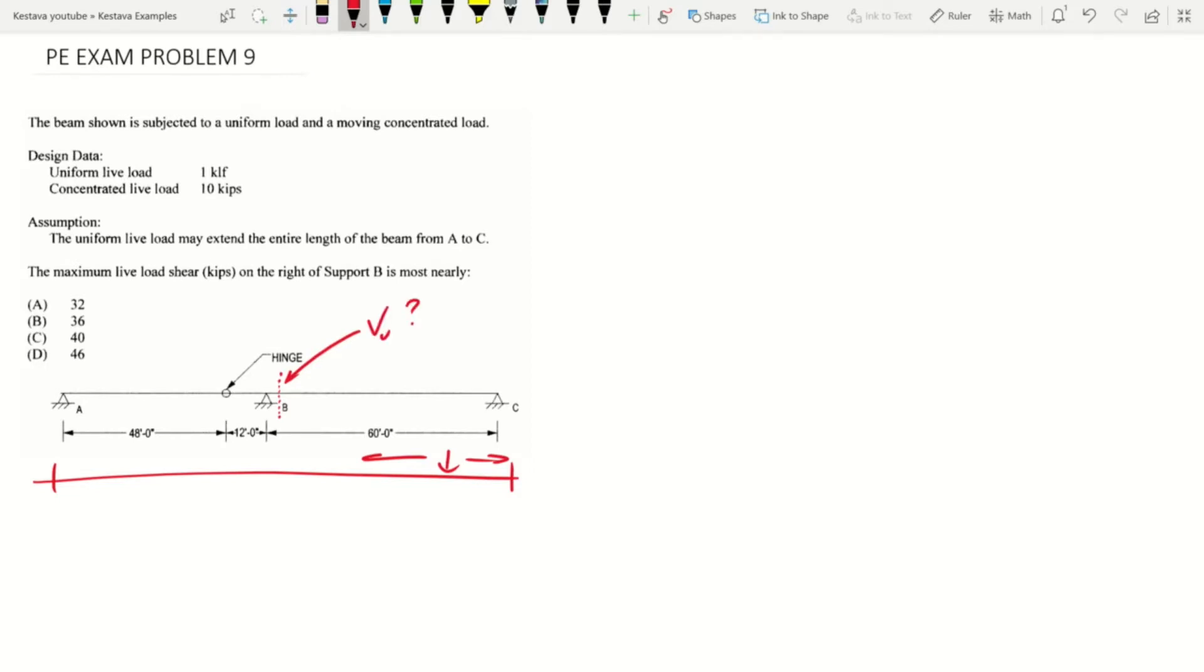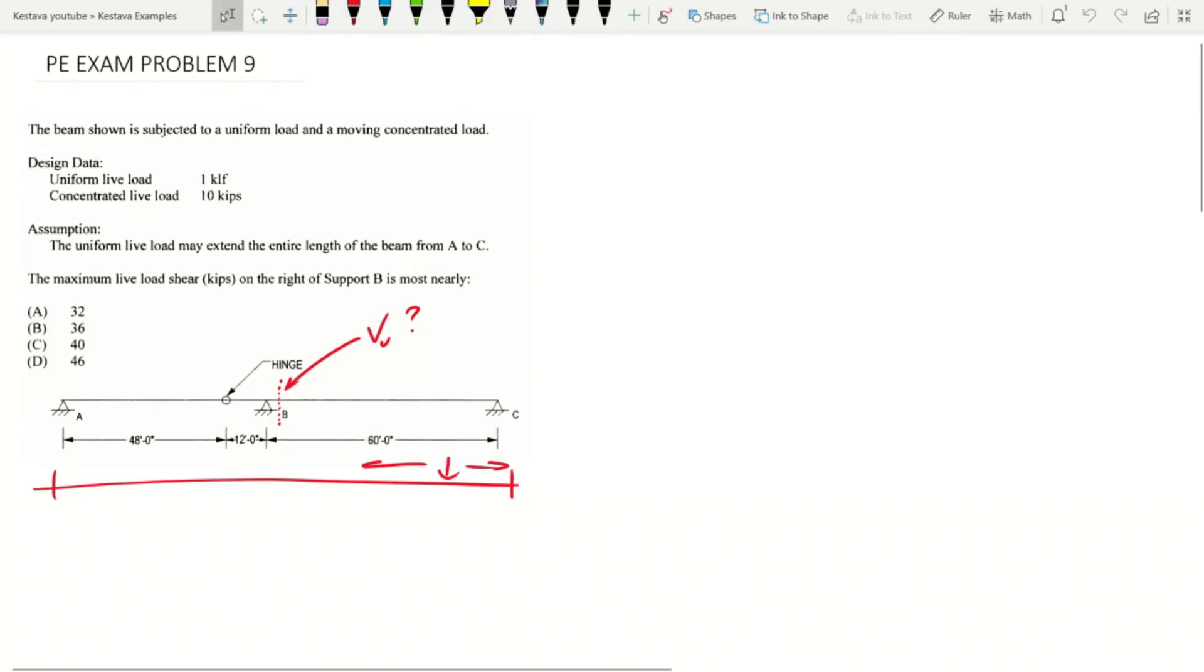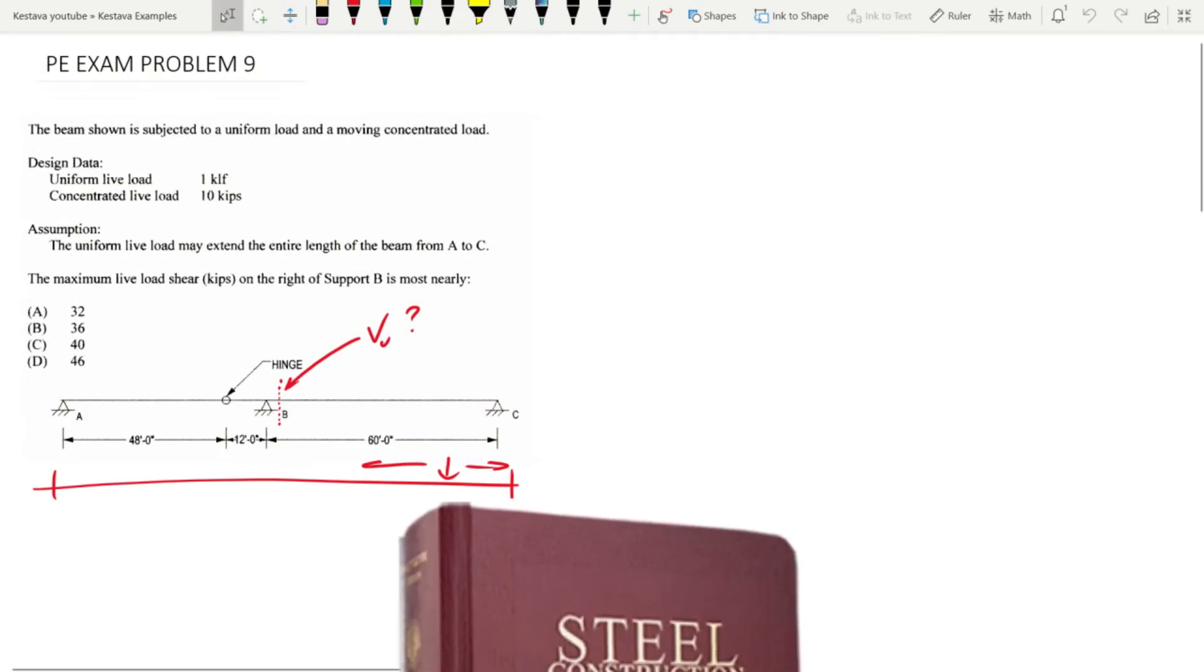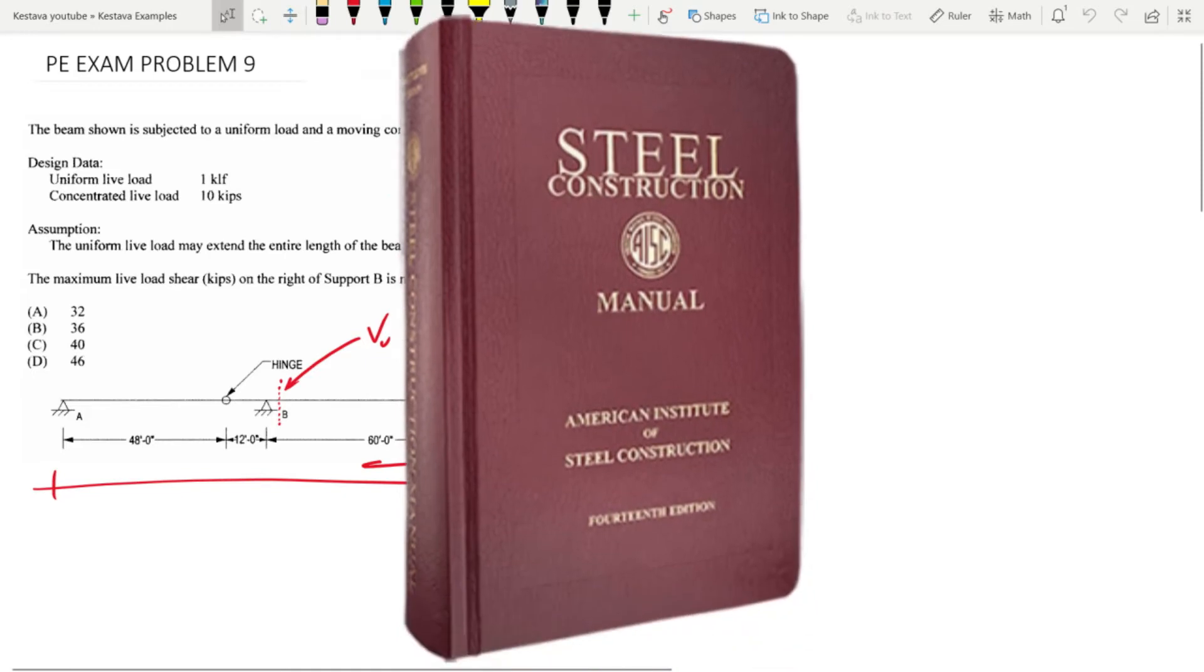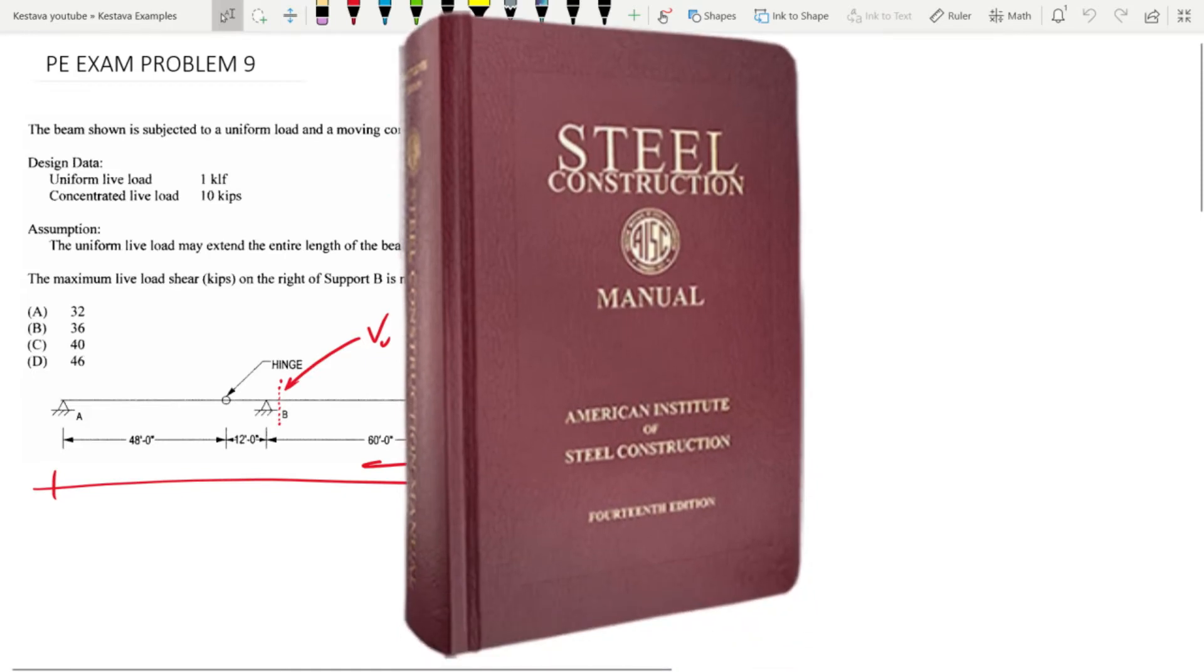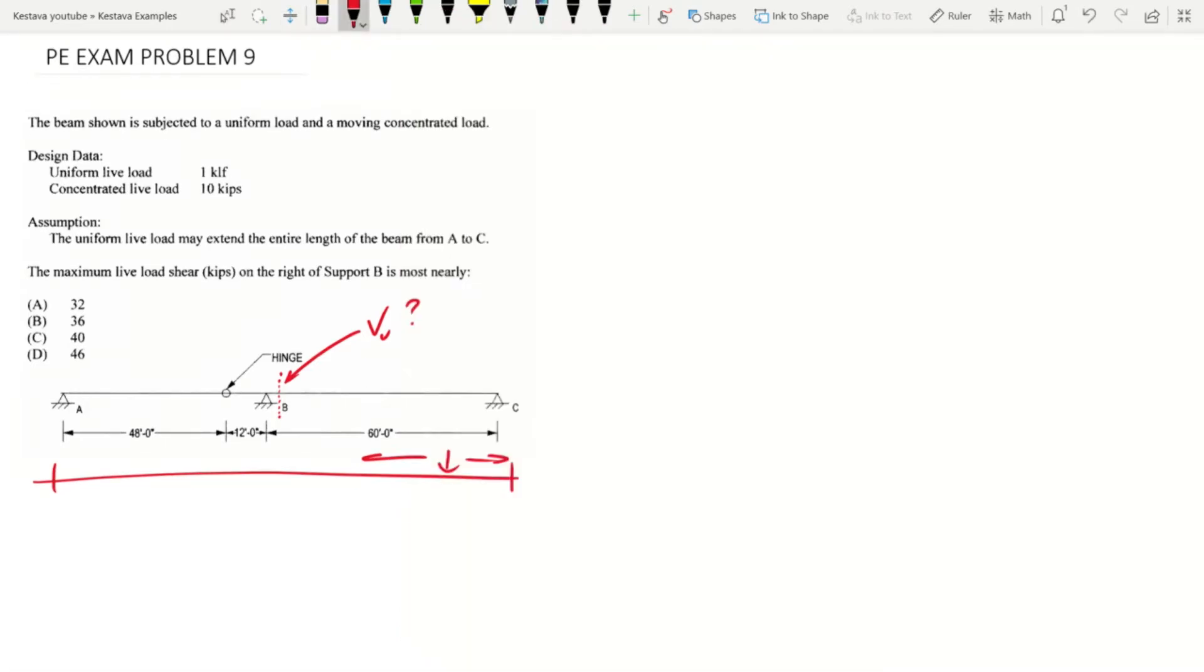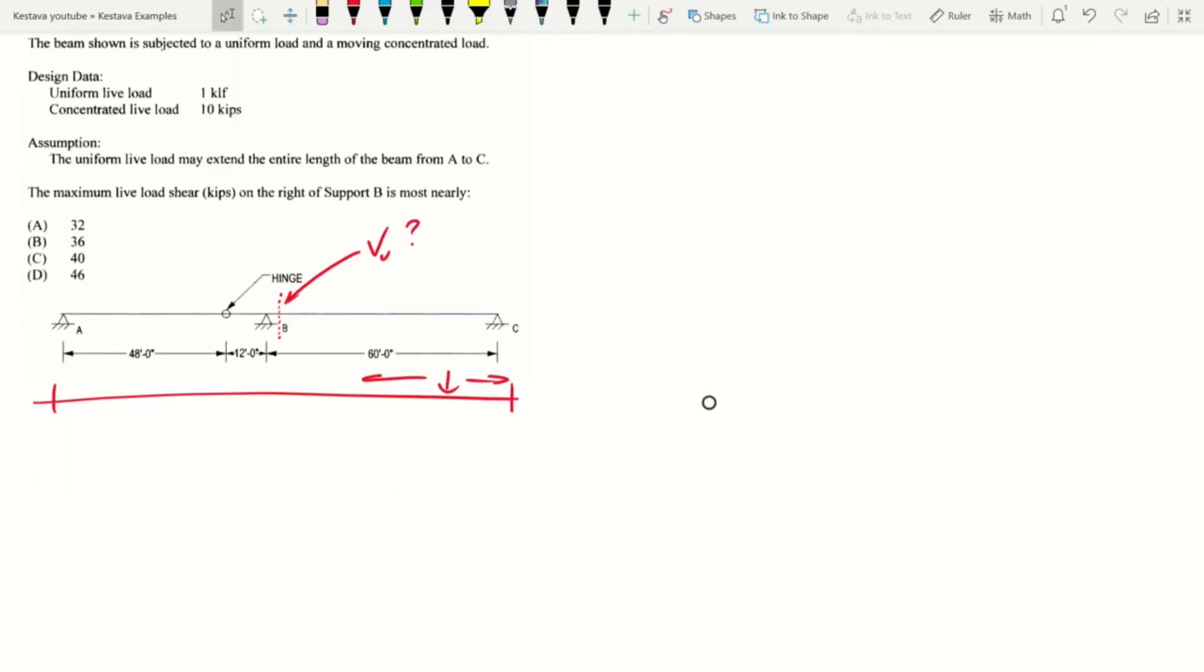All right, so where I'm going to jump to first is, as always with me, the AISC steel manual. This would be where I'd go to, as we have some kind of static-like problems here, although we do have that moving load, but not to worry.